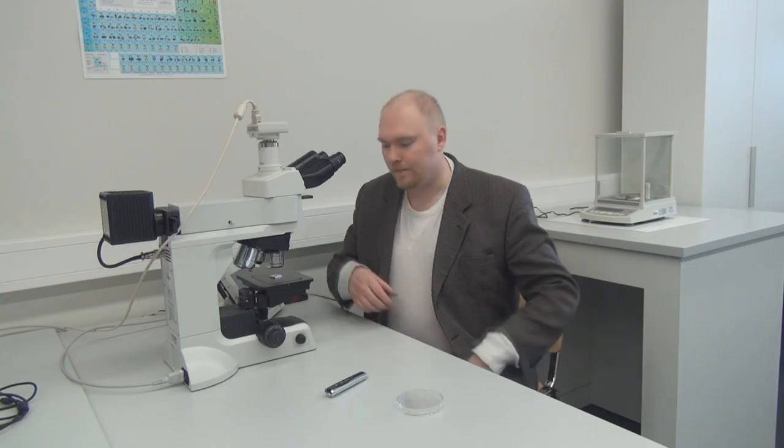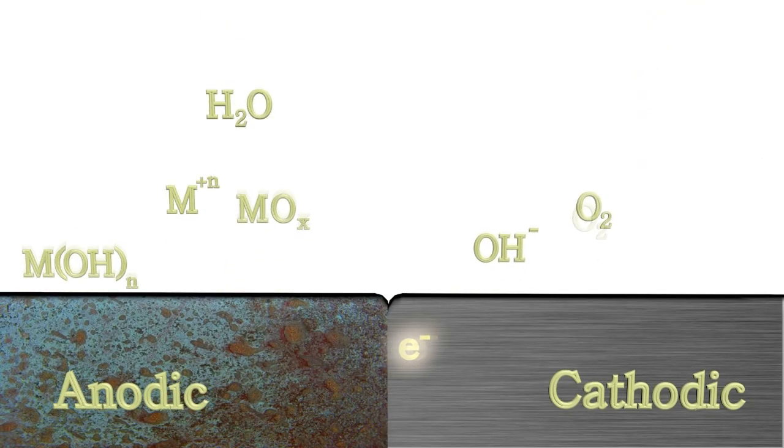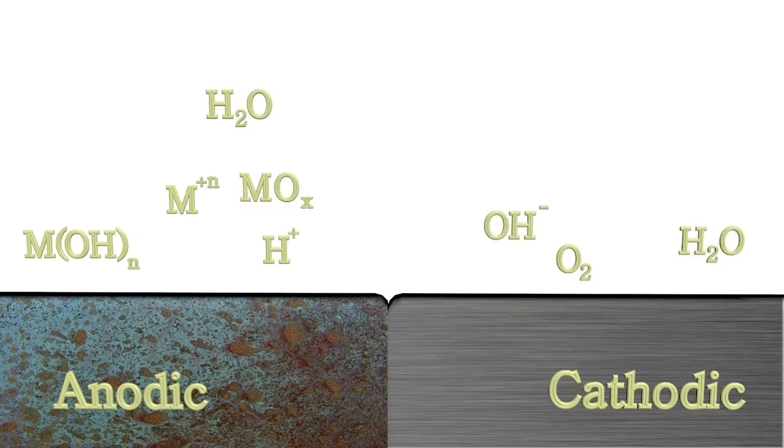But let's take a closer look at why galvanic corrosion occurs. When the two metals are in contact with each other and covered with an electrolyte, then the more active metal becomes anodic and the passive metal cathodic.